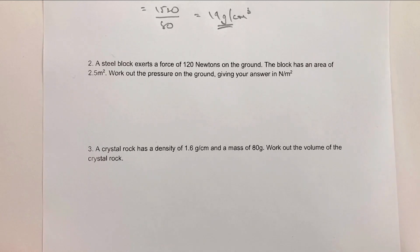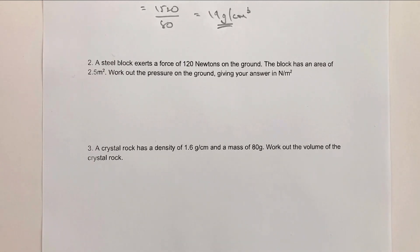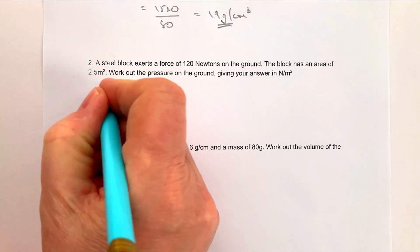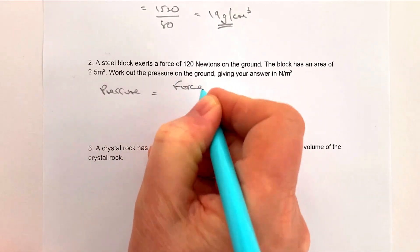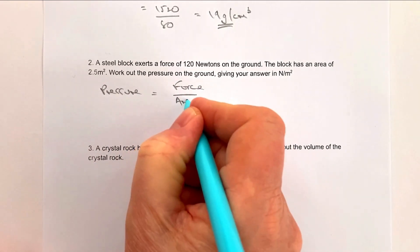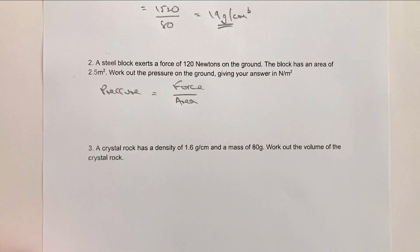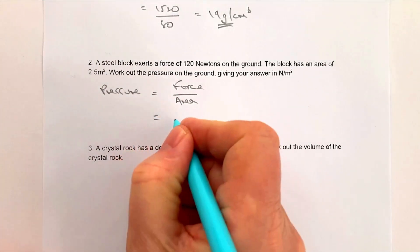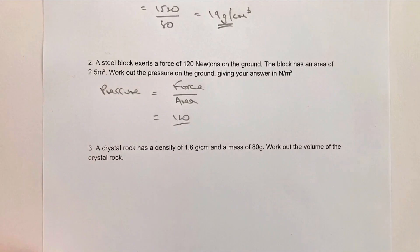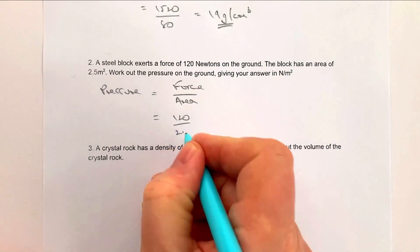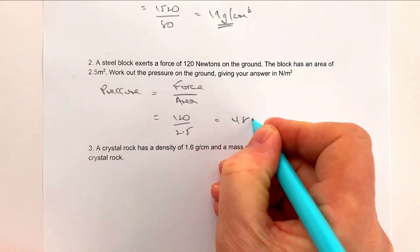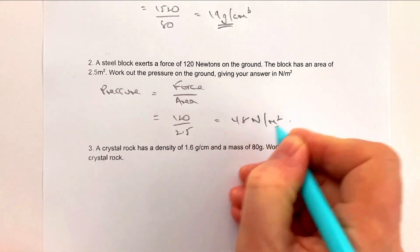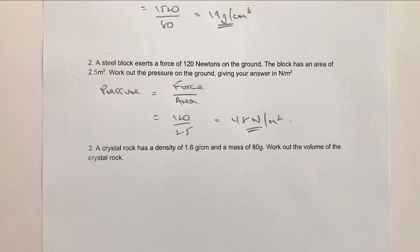Moving on to question two: a steel block exerts a force on the ground. The formula we need is pressure equals force divided by area. We're given both pieces of information — the force is 120 and the area is 2.5. So 120 divided by 2.5 gives us 48 newtons per meter squared, and that's the answer to question two.